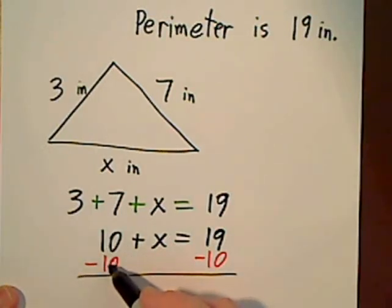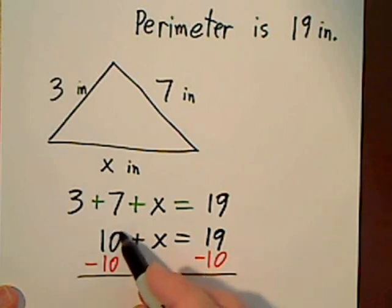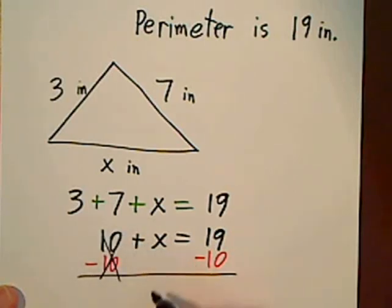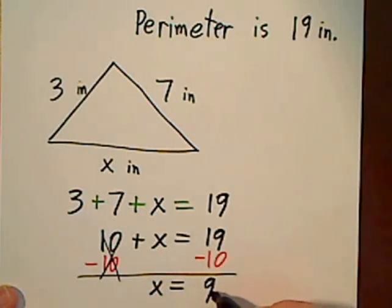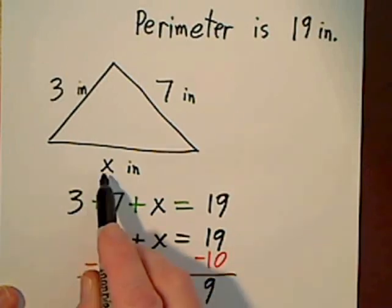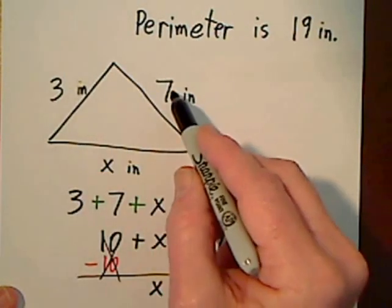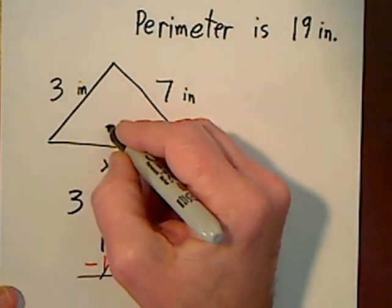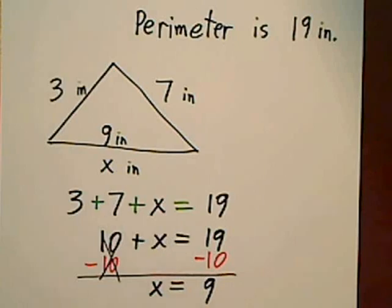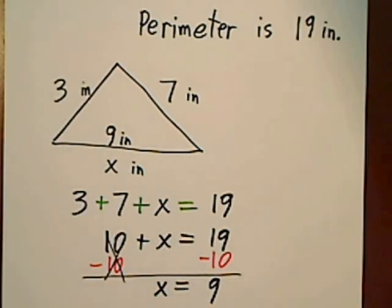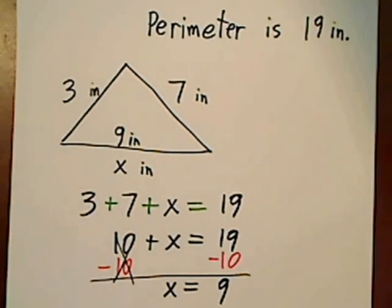Positive 10 with a negative 10 gives us 0, so I don't have to write that. The x just drops down. When we combine these two, we're left with 9. So we figured out that x is 9 inches. So if that side is 3, that side is 7, this side is 9 inches. We'll use the same approach on the other problem.